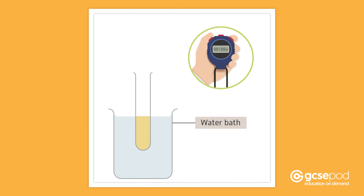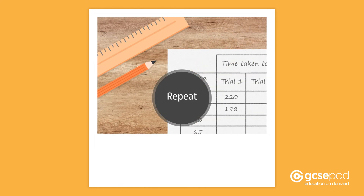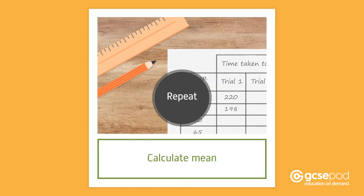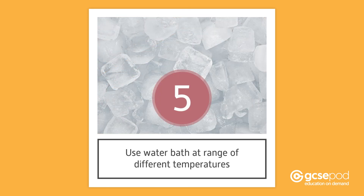Repeat another two times, making sure you record your results in a suitable table and calculate a mean. Repeat this method using a water bath at a range of different temperatures, aiming for at least 5 different ones. You can use ice to make water baths for temperatures lower than room temperature.